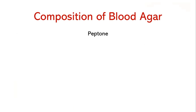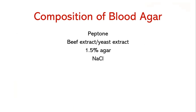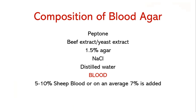The composition of blood agar is almost the same as nutrient agar — peptone, beef or yeast extract, agar, NaCl and distilled water — with the only difference being the addition of blood. 5–10% sheep blood, or on average 7% sheep blood, is added. The pH of blood agar should be from 7.2 to 7.6.